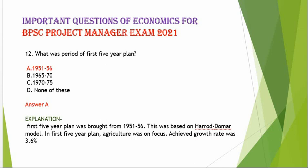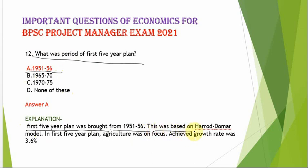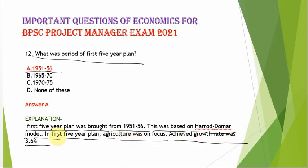The next question is: what was the period of the First Five Year Plan? The correct option is 1951 to 1956. The First Five Year Plan was based on the Harrod-Domar model. In the first year plan, agriculture was the main focus. The achieved growth rate was 3.6%.